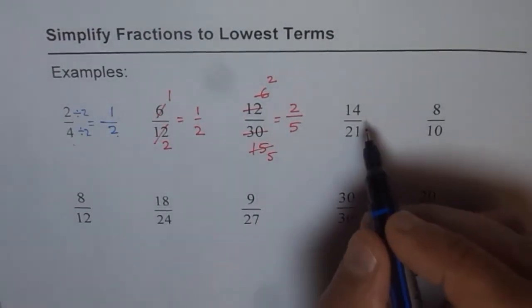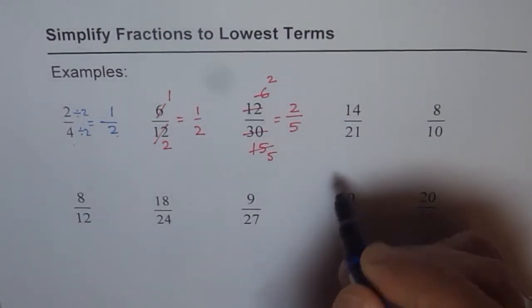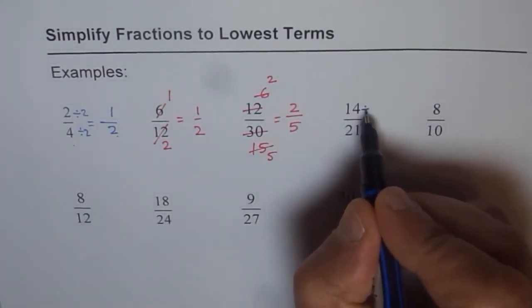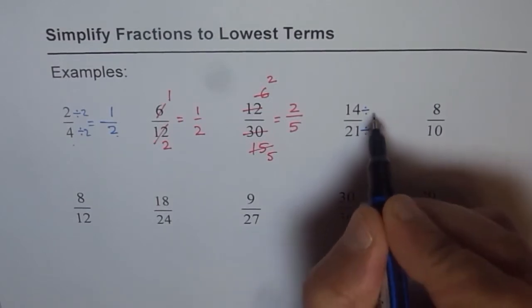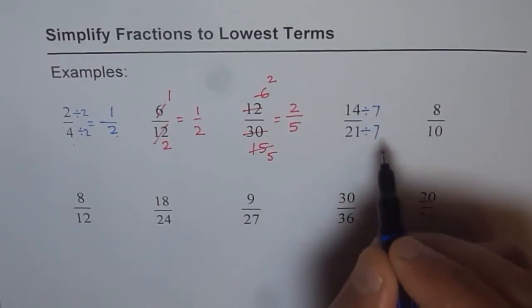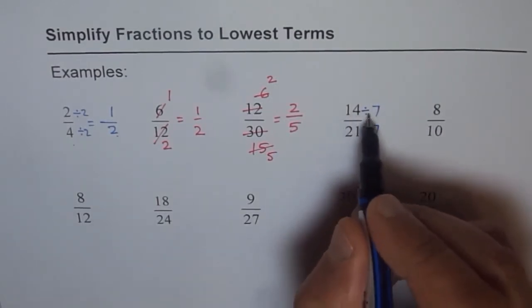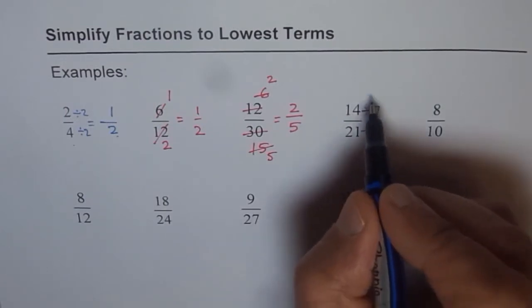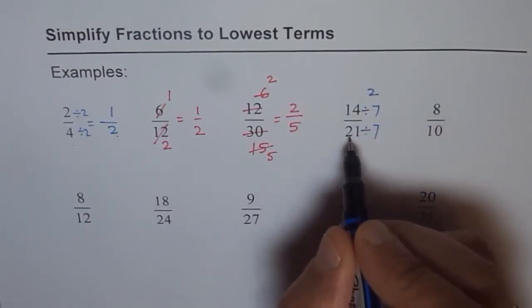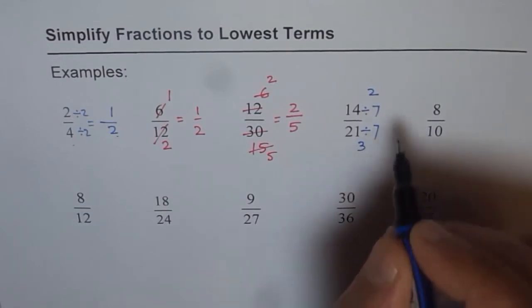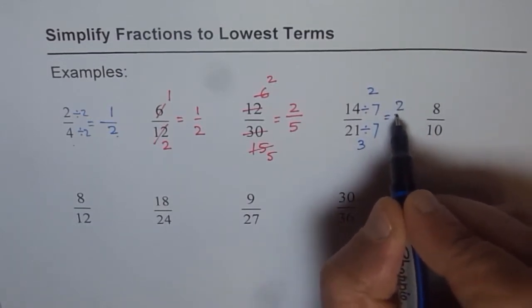Let's do the next one. 14 divided by 21. Some students prefer writing like this. Both can be divided by 7. Yes, you are right. So if you divide by 7, what do you get? 14 divided by 7 is 2. And 21 divided by 7 is 3. So the answer is 2 over 3.